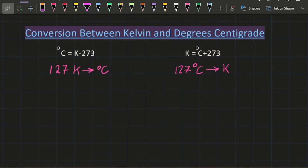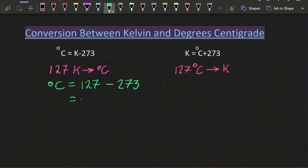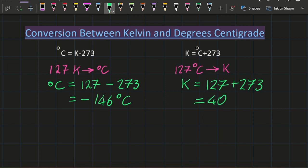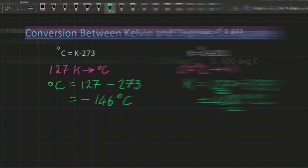The conversion — those are the two equations. So if you're going to convert 127 Kelvin to degrees C, what you need to do is just take 273 away, leaving minus 146 degrees C. Going the other way, just add 273, which gives you 400. The IB always uses 273 because it makes nice round numbers.